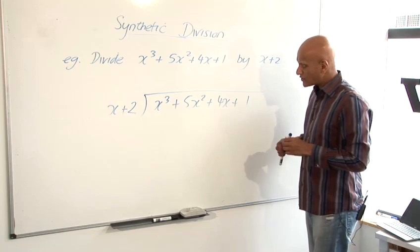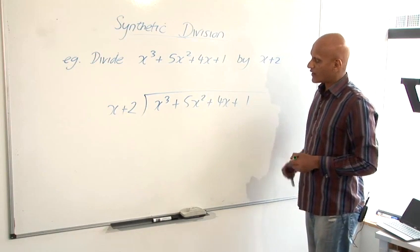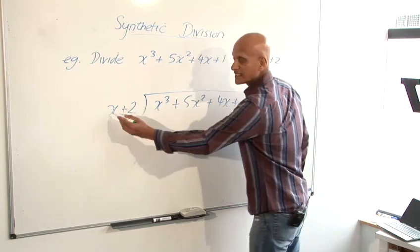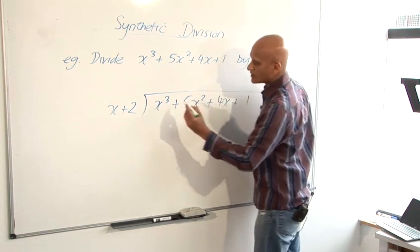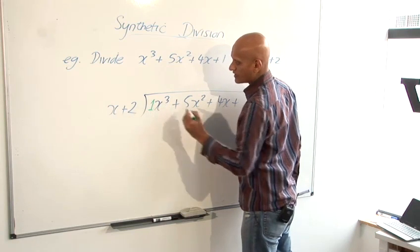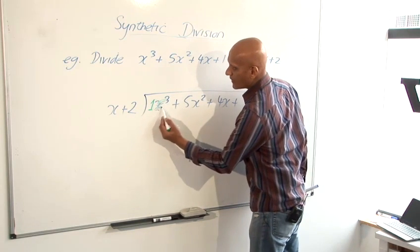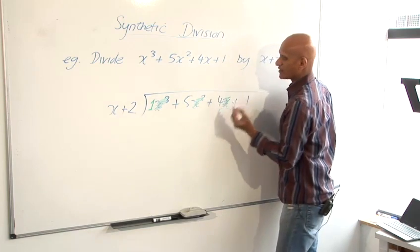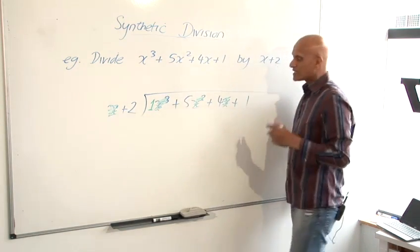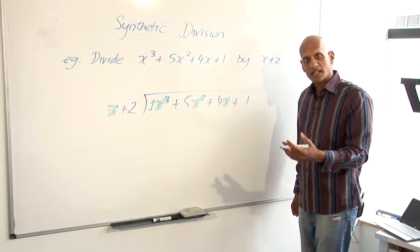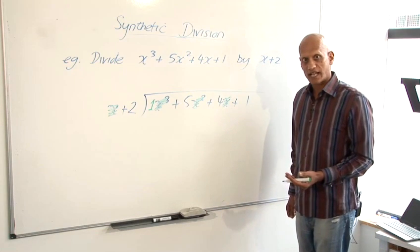Now, when we're doing synthetic division, what we're largely doing is we're ignoring the x's in both of these equations. So, what I'm going to do is just put a 1 in front of that x cubed, and then I'm going to just rub out the x cubed, rub out the x squared, rub out the 4x, and rub out that x there. Okay, so what we're doing is just looking at the numbers, and that's why it's a speeded up version of the same calculation.